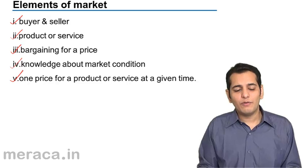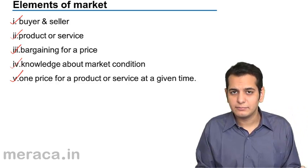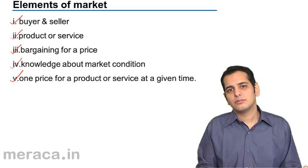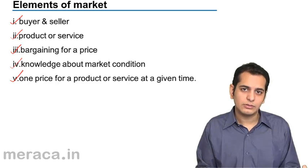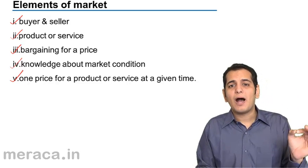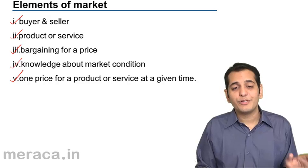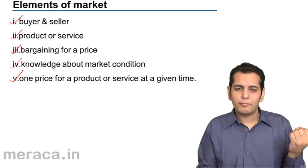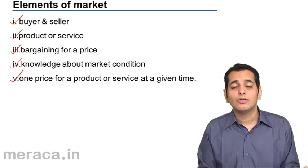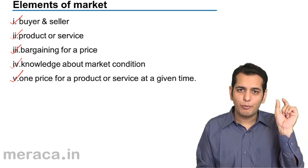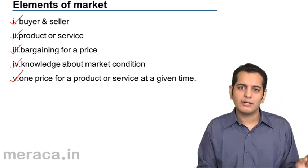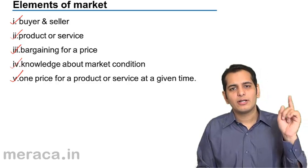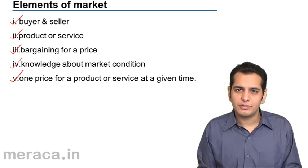Finally, one price for a product or service at a time. The market is where the transaction happens — buying and selling of goods. When you buy a product, you buy it at a price; when you sell a product, you sell it at a price. The bought price and the sold price are the same. So we can say that a product has one price in the market at a time — at the time when it is bought or sold.